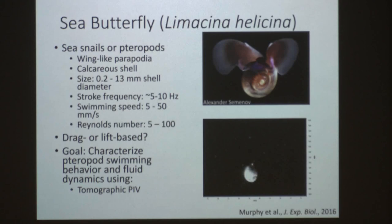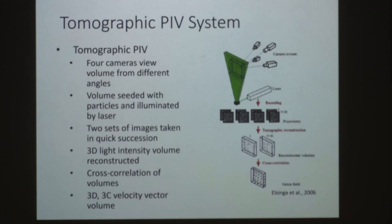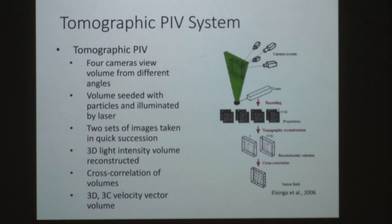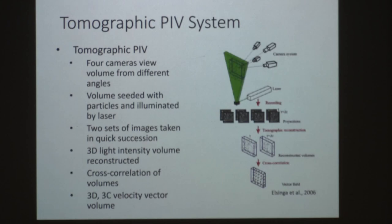Tomographic PIV uses four or more cameras all looking at the same measurement volume from different angles. That volume is seeded with light-reflecting particles and illuminated by a laser. You take two sets of images in quick succession at times t and t+Δt, then reconstruct these into a three-dimensional light-intensity volume, pinpointing where all particles are in 3D space at two time points. Cross-correlating sub-regions of those volumes produces a three-dimensional, three-component velocity vector volume.